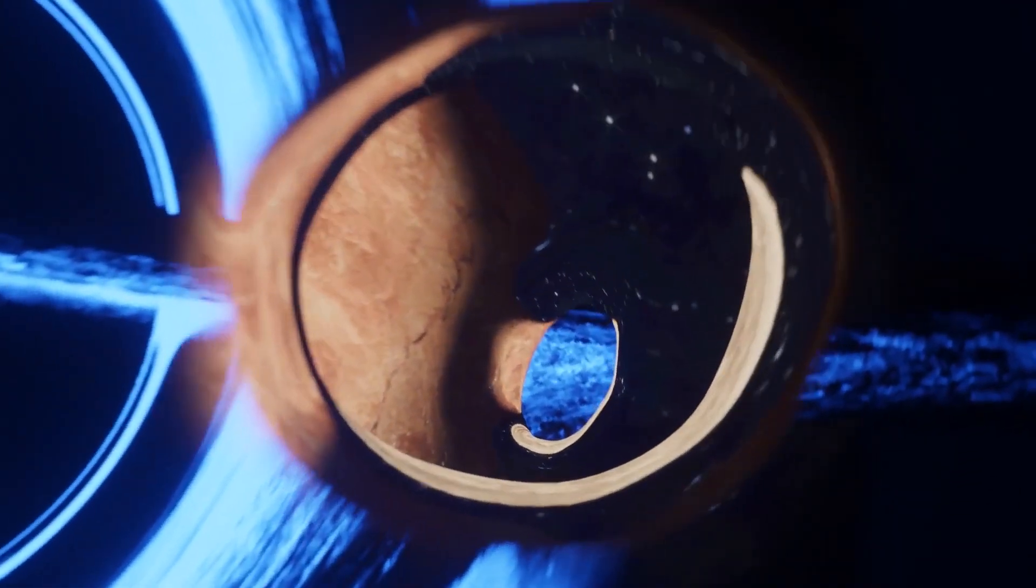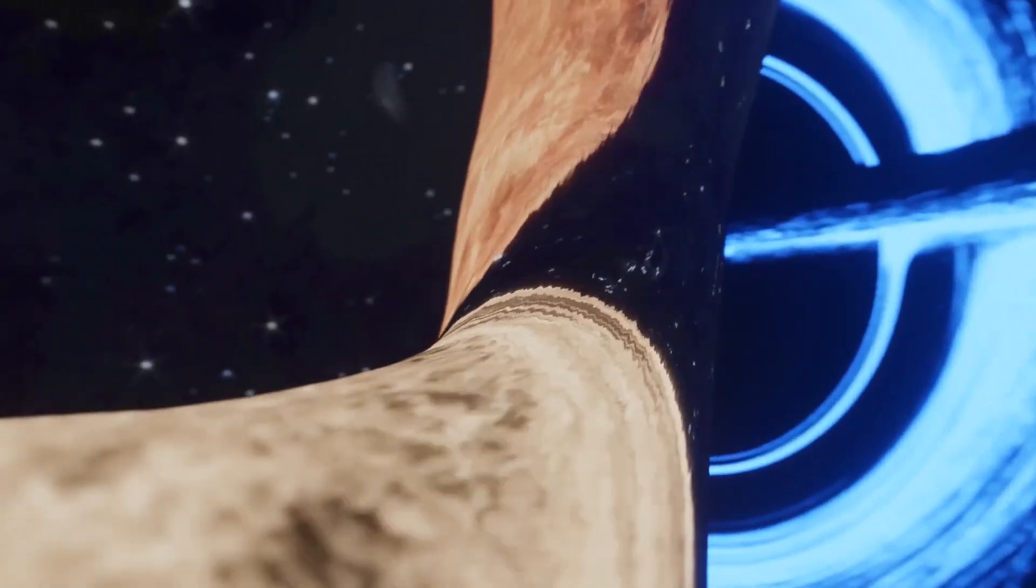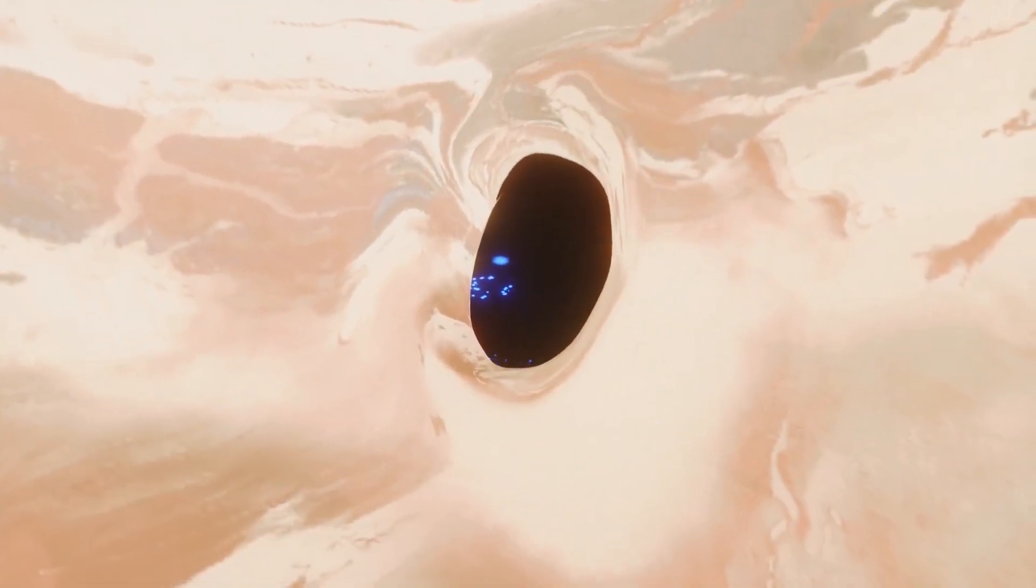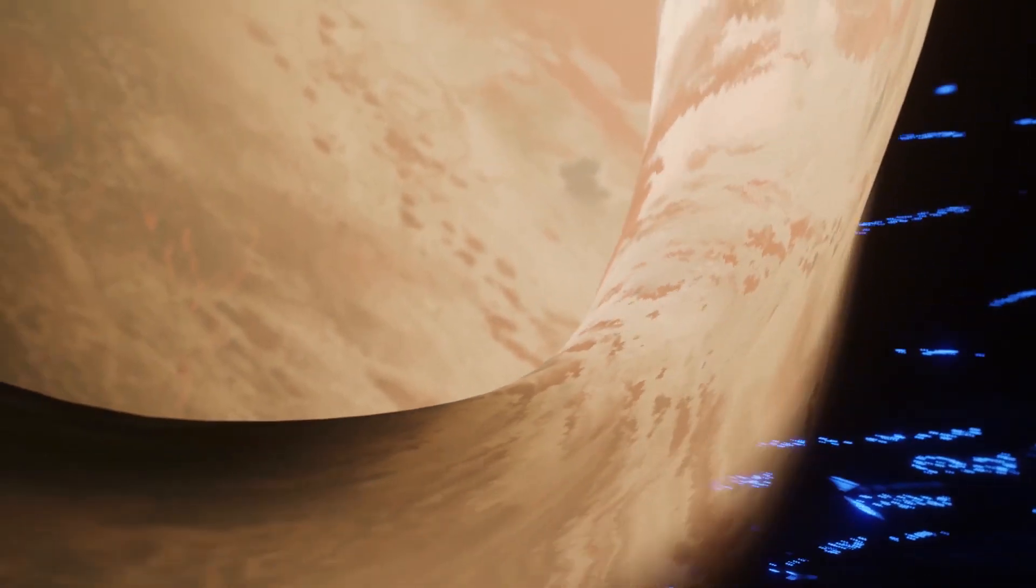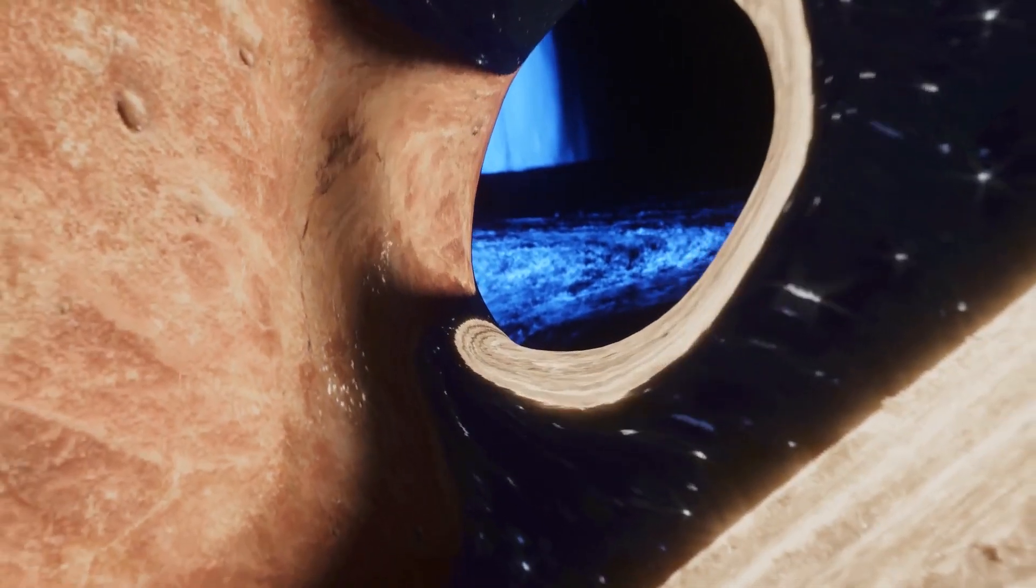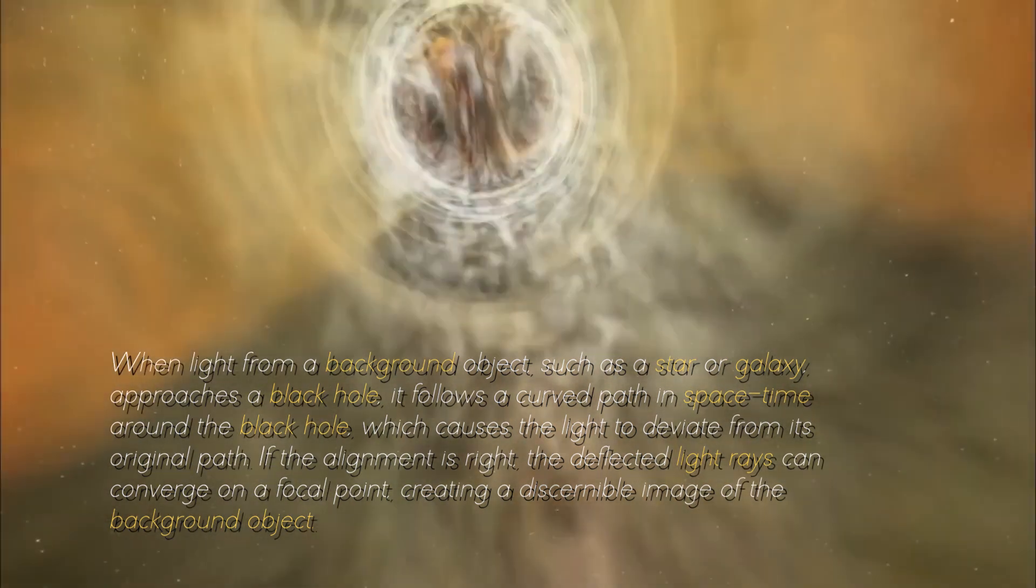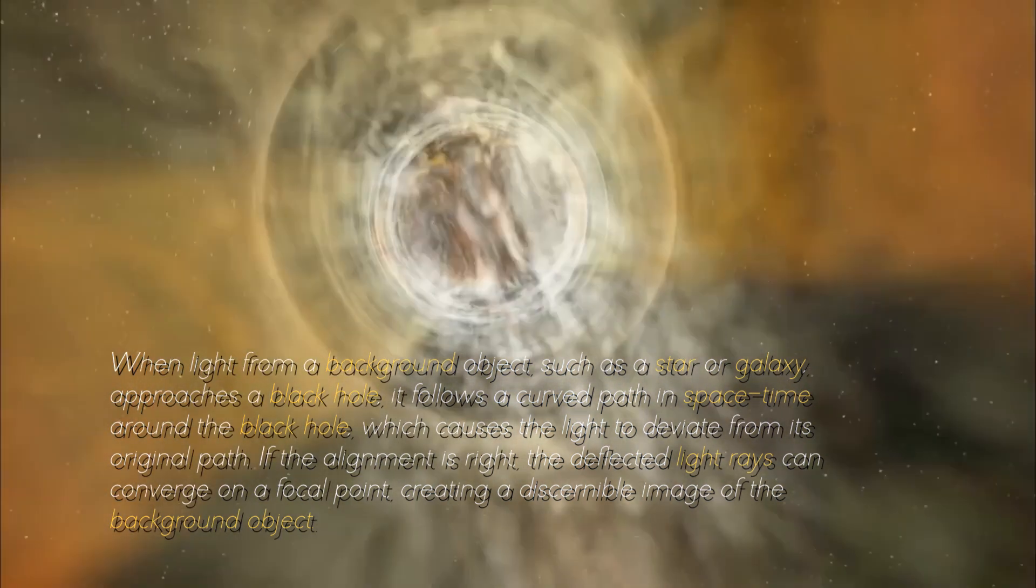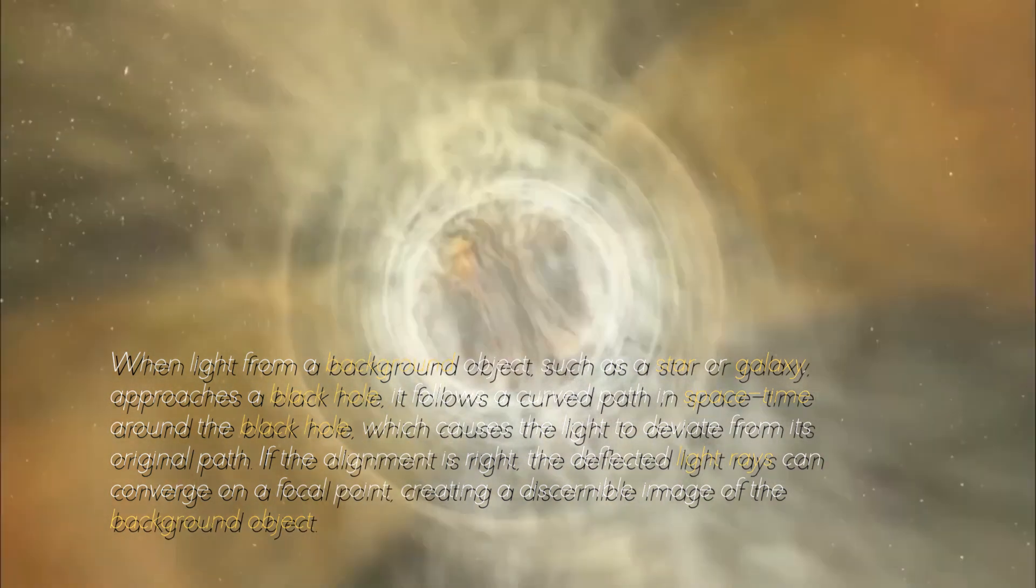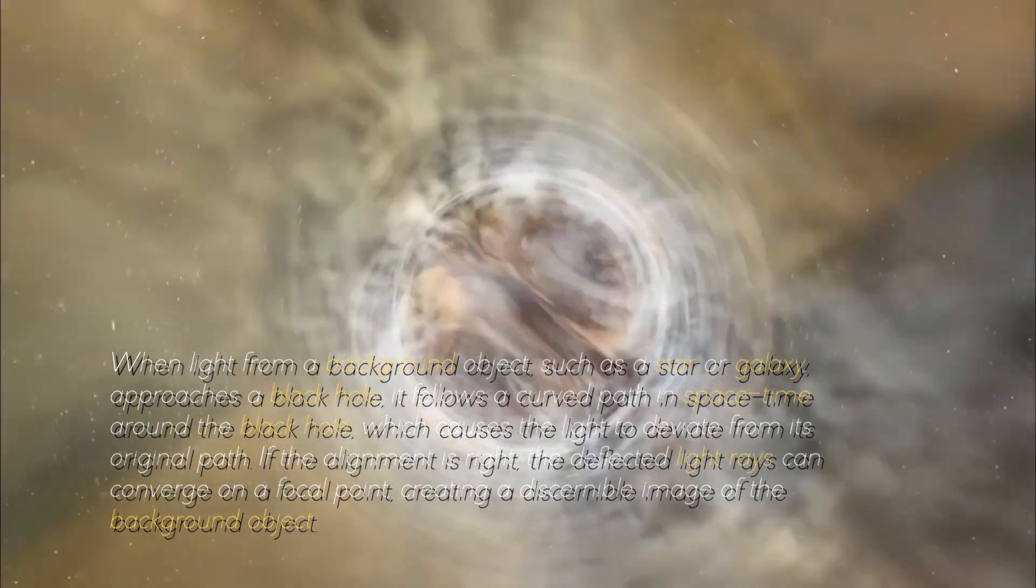Massive bodies, such as stars or black holes, are especially effective in causing significant gravitational lensing due to their immense gravitational attraction. Black holes, in particular, represent one of the most extreme examples due to their incredible mass and compact size, leading to very pronounced lensing effects. When light from a background object, such as a star or a galaxy, approaches a black hole, it follows a curved path in spacetime around the black hole, which causes the light to deviate from its original path.